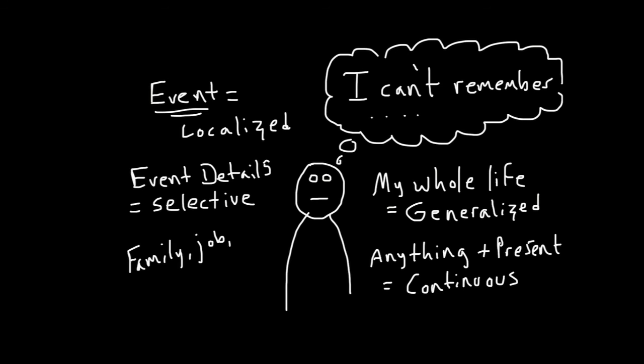In systematized amnesia there's a loss of memory for certain categories of information such as all memories related to one's family.